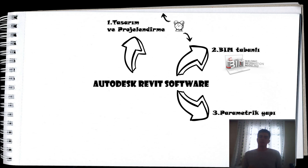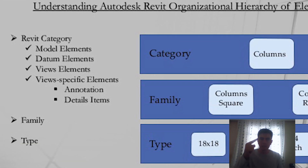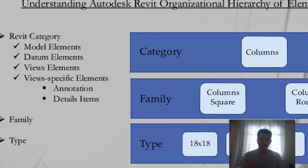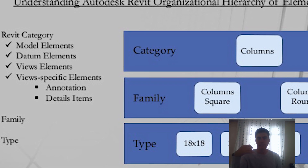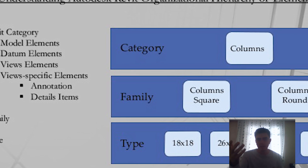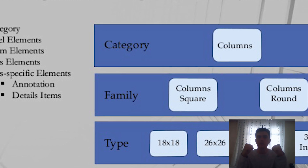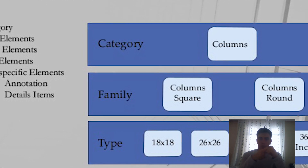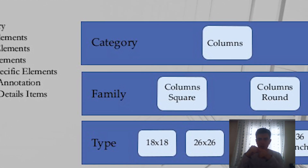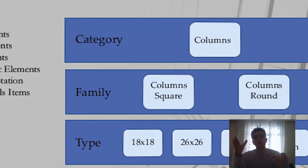Family'i biraz daha açarsak: Revit platformundaki tüm öğeler bir ailenin parçasıdır ve açıkça tanımlanmış bir hiyerarşiye uyarlar. Bu hiyerarşinin birinci basamağında kategoriler, ikinci basamağında Family, üçüncü basamağında ise tip yer alır. Kategoriler yazılım içerisinde önceden tanımlanmıştır; eklenemez, silinemez ve yeniden adlandırılamaz. Model kategorileri bina modelinizi oluşturan tüm unsurları içerir.